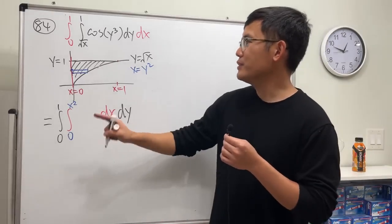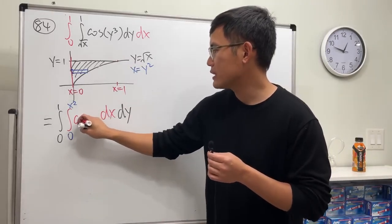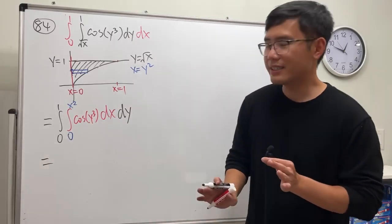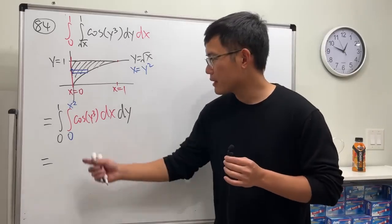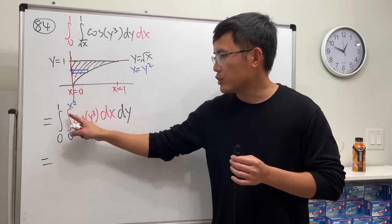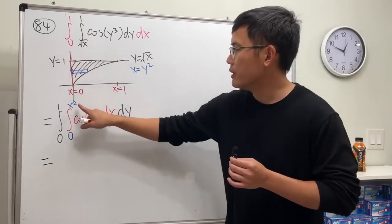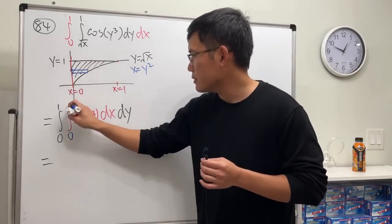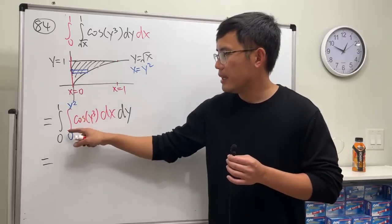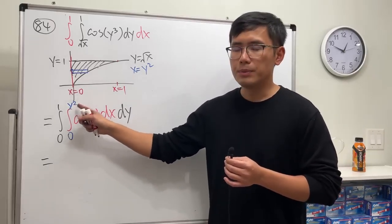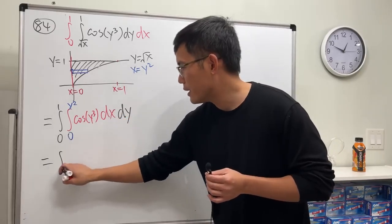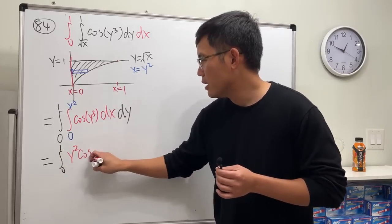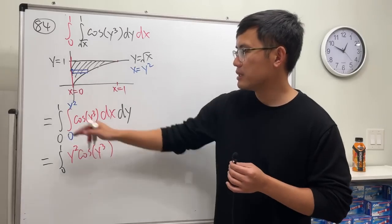And then the function stays the same: we have cosine of y to the third power. Integrate this real quick. This is constant in the x world. Integrating this, we just put the x in, and then - oops, sorry, should be y here, should be y here. Put the x here and then integrate. Let me plug in y square, so we will first have y square and then cosine of y to the third power. And then plug in zero, it's just zero.